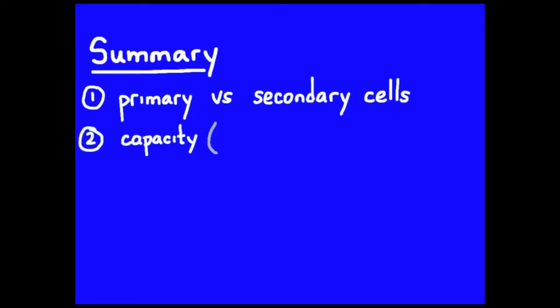Secondly, we looked at the quantitative characteristics like capacity of a battery, which tells you how long a battery can supply a sustained current. So 1400 milliamp hours, which means the battery can supply 1400 milliamps for an hour.